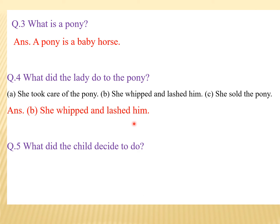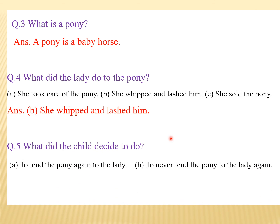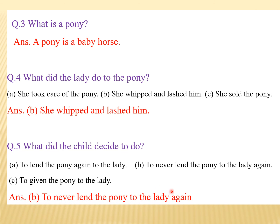Next: what did the child decide to do? बच्चे ने क्या decide किया था? Options: A) to lend the pony again to the lady; B) to never lend the pony to the lady again; C) to give the pony to the lady. Answer is B — to never lend the pony to the lady again. कि वो कभी भी pony को दोबारा नहीं देगा lady को. Clear?